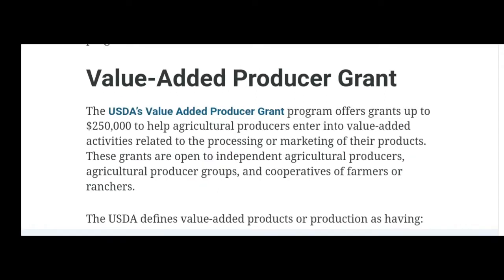Next we have the Value Added Producer Grant. This is another grant authorized by the Agricultural Risk Protection Act — so it's also an agricultural grant. It helps agricultural producers with value-added activities, generate new products, marketing, and increase income. They may not still have this grant open, but check it out online just in case. It's basically a development and marketing grant that gives as much as $250,000 in working capital.